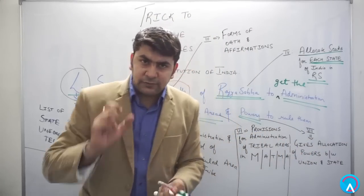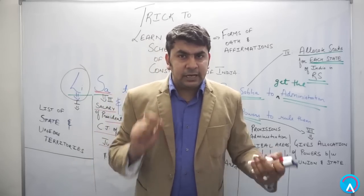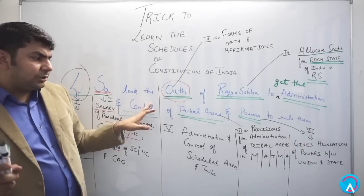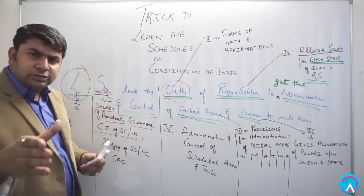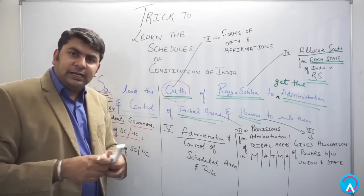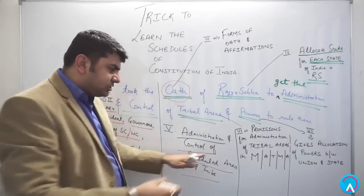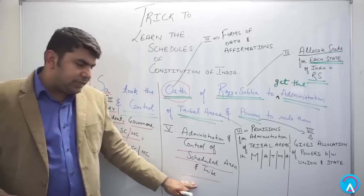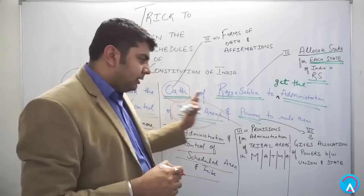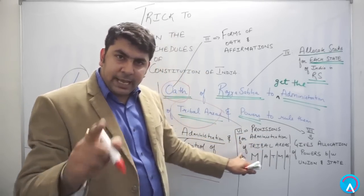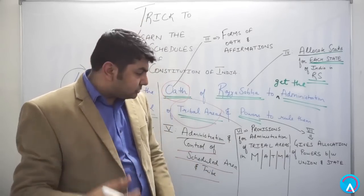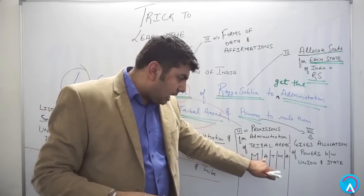The fifth schedule comes from 'administration and control' — it deals with the Administration and Control of Scheduled Areas and Scheduled Tribes. The sixth schedule comes from 'tribal areas' — it covers Provisions for Administration of Tribal Areas, represented by the acronym MATMA, standing for five northeastern states: Meghalaya, Assam, Tripura, Manipur...